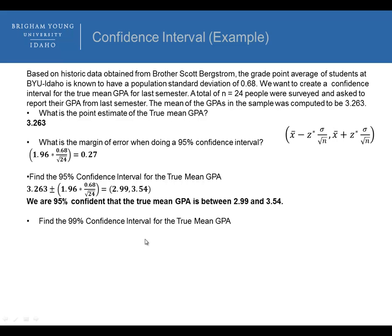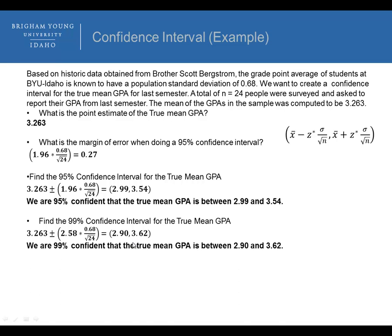What if we're doing a 99% confidence interval for the true mean GPA? The only thing that changes is the critical value, which becomes 2.58. When we solve for that, our lower bound is 2.90 and our upper bound is 3.62. We would interpret this by saying we are 99% confident the true mean GPA is between 2.90 and 3.62.